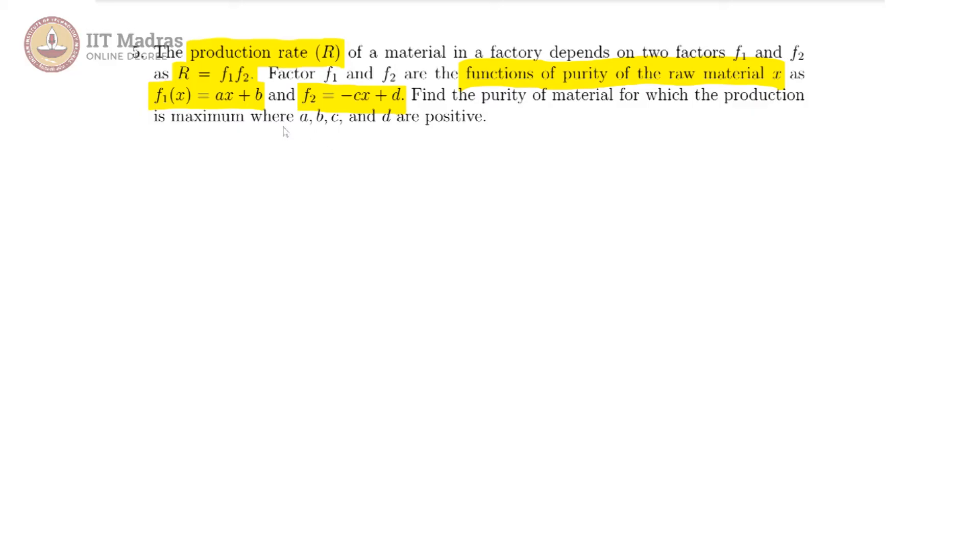f1 of x is ax plus b, f2 of x is minus cx plus d, and it is given that a, b, c, d are all positive. It is asked: find the purity of material, that is the value of x, for which the production is maximum.